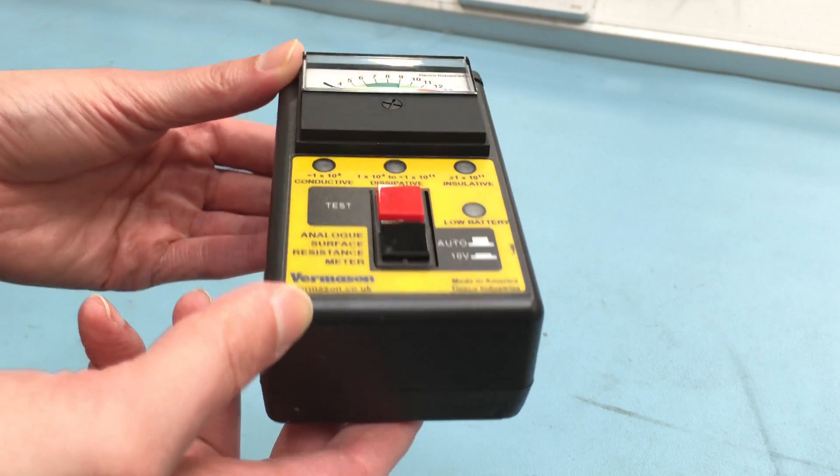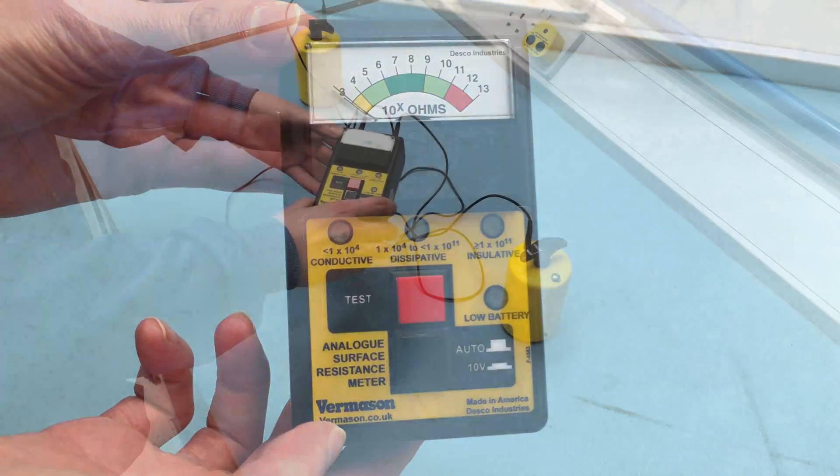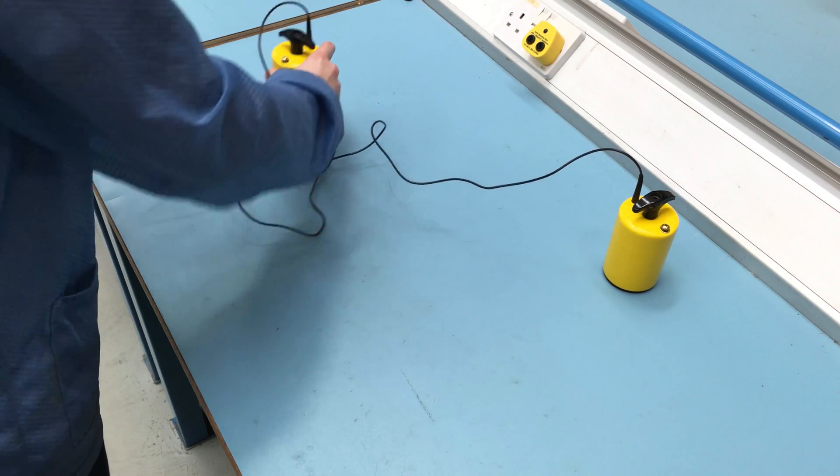You can perform additional measurements by moving the electrodes to different areas, ideally to the most commonly used area or worn areas.